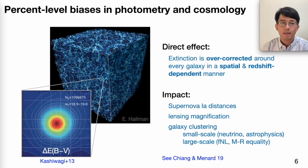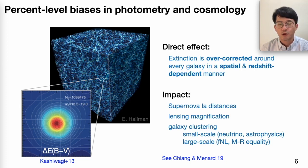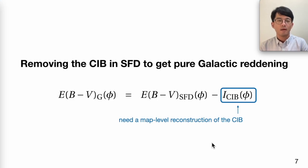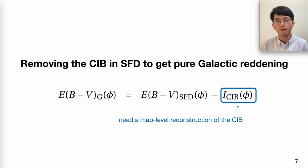What we found is that roughly speaking, there is about a percent-level bias in probes like supernova Ia distances or, for example, lensing magnification. For people who are interested in the details, please feel free to take a look at that paper. Today, I would like to tell you about a new development in controlling this dust map systematic for future cosmology experiments.